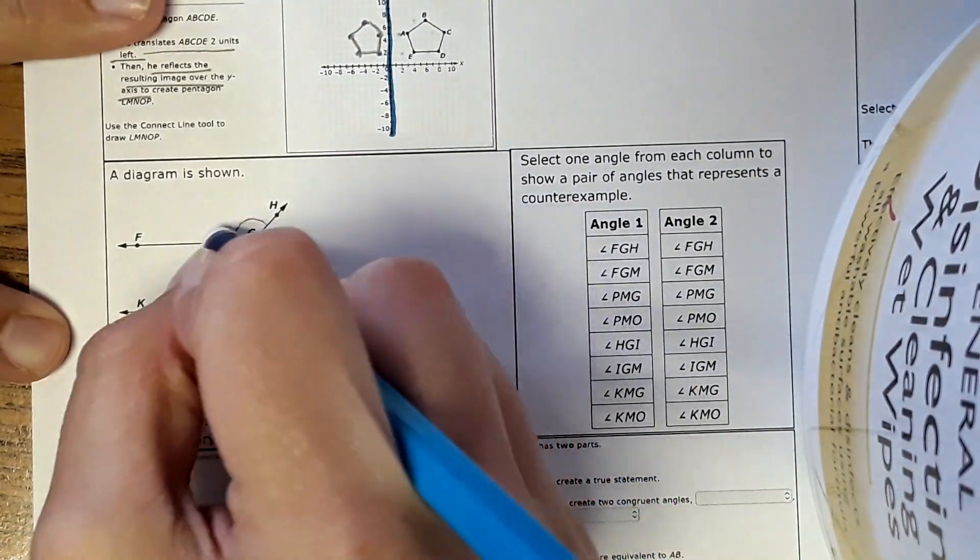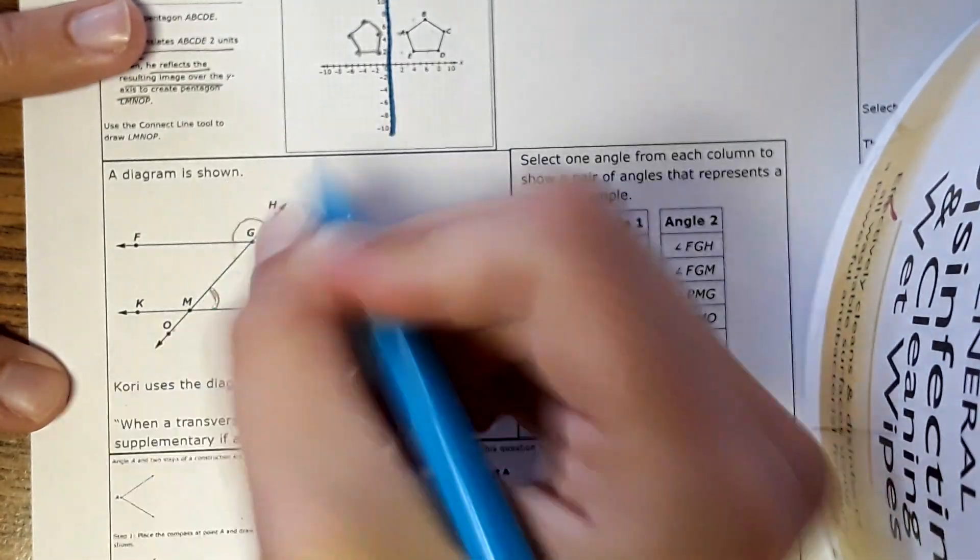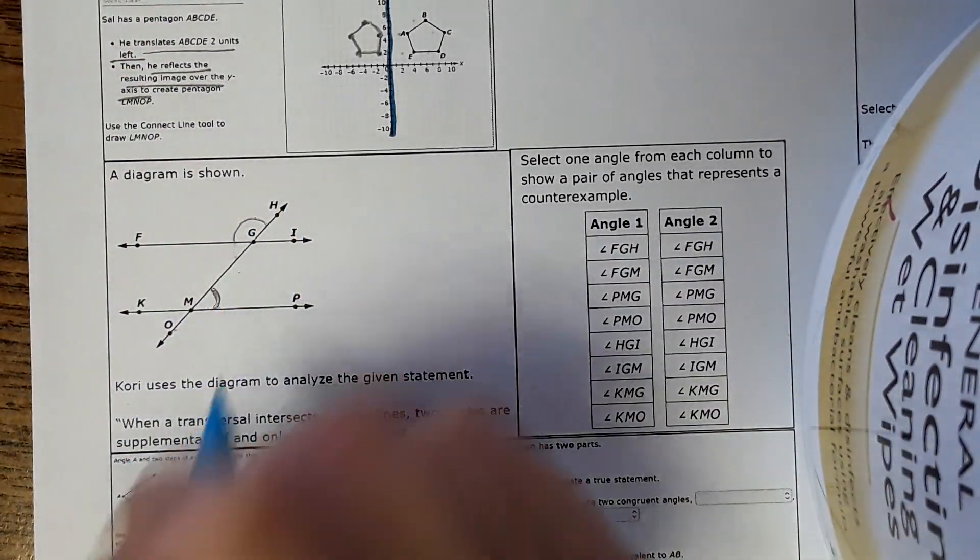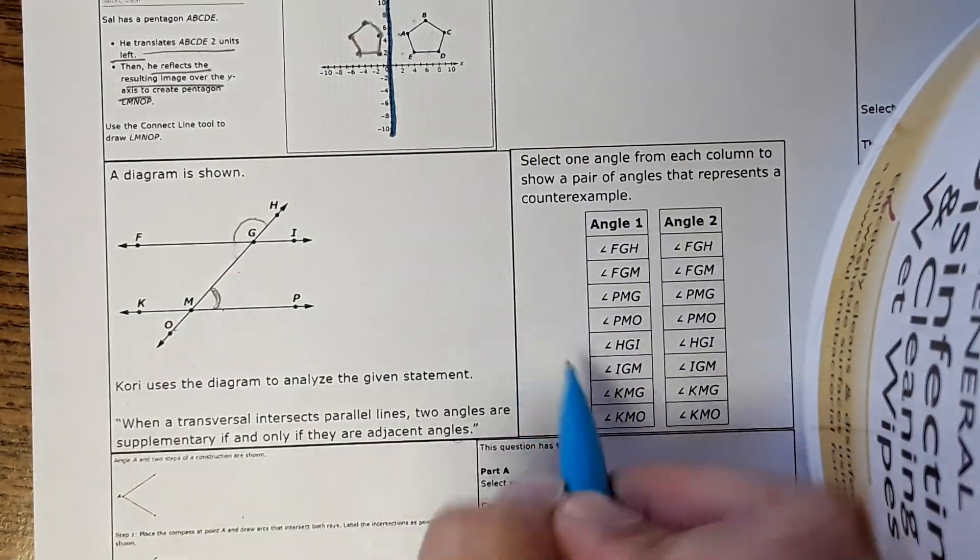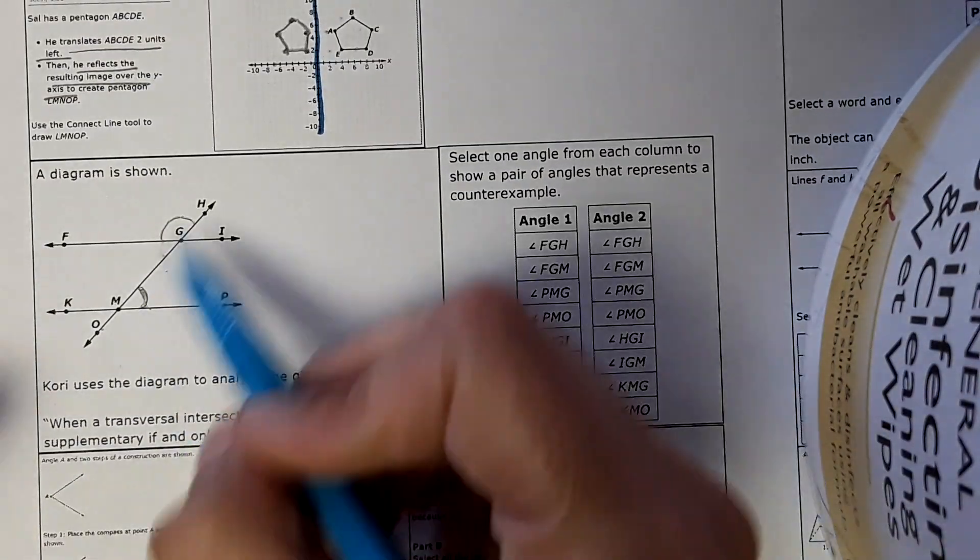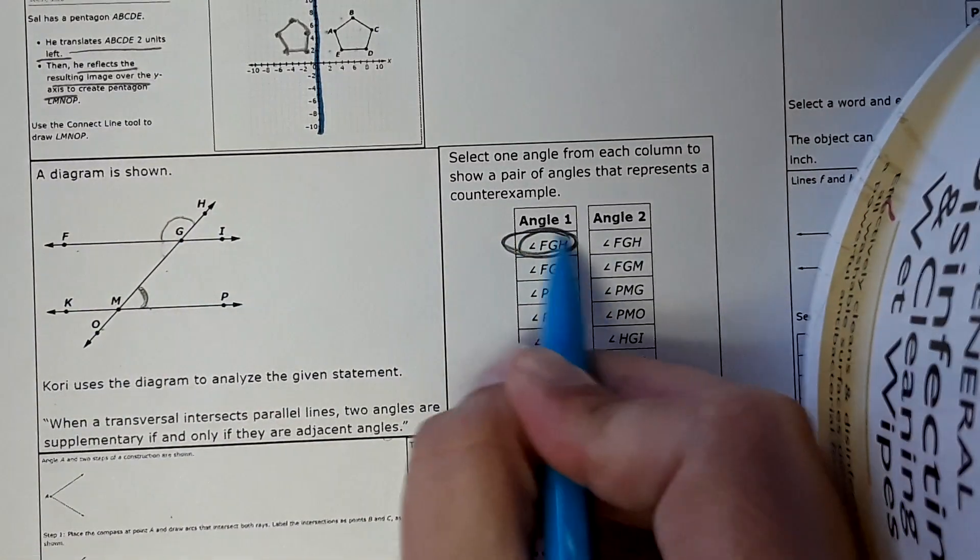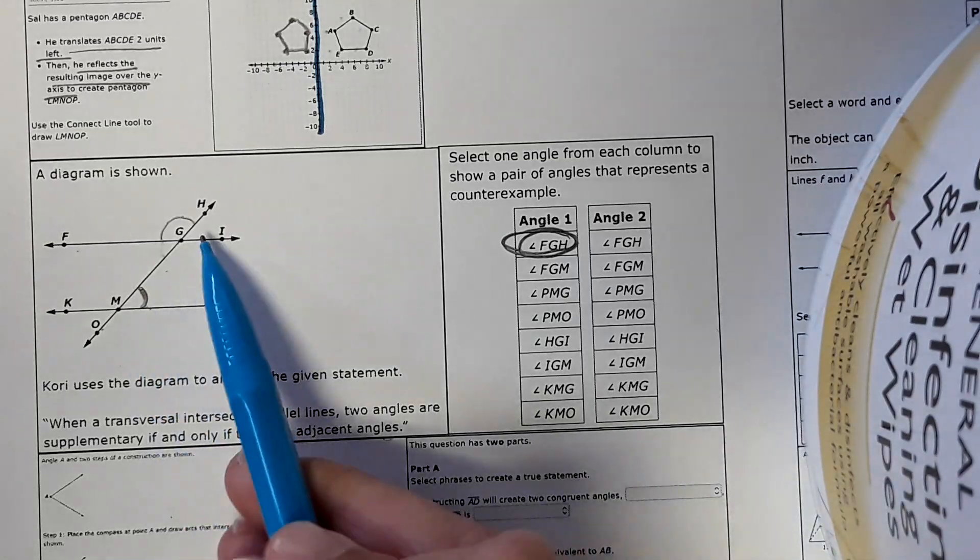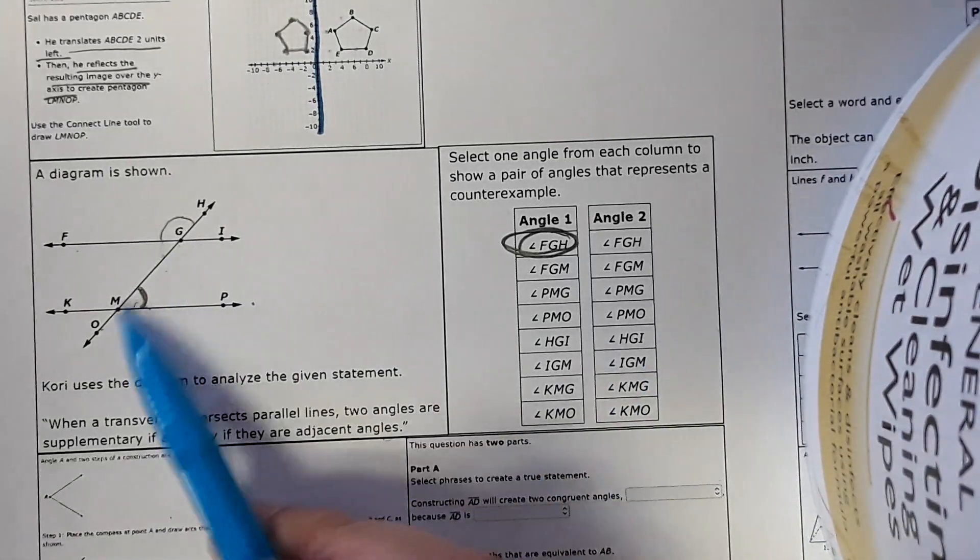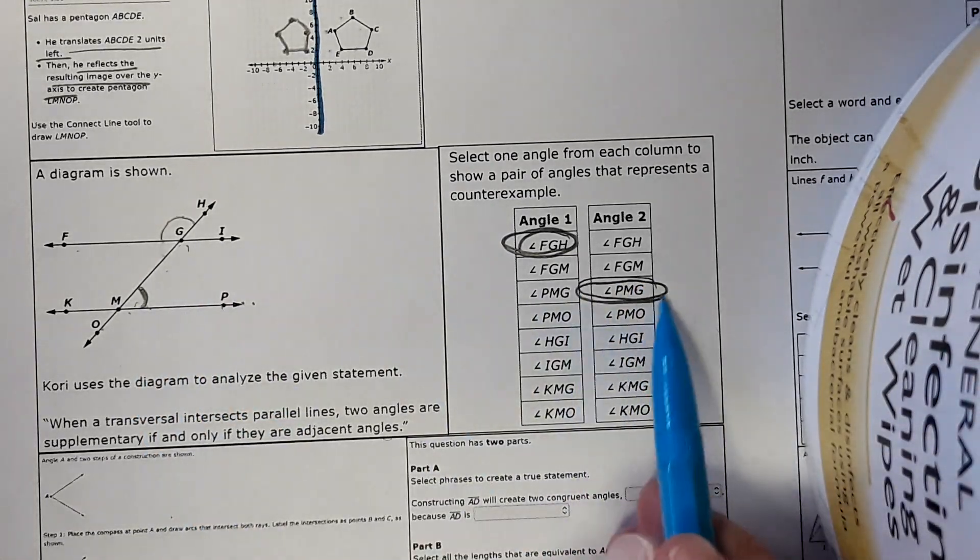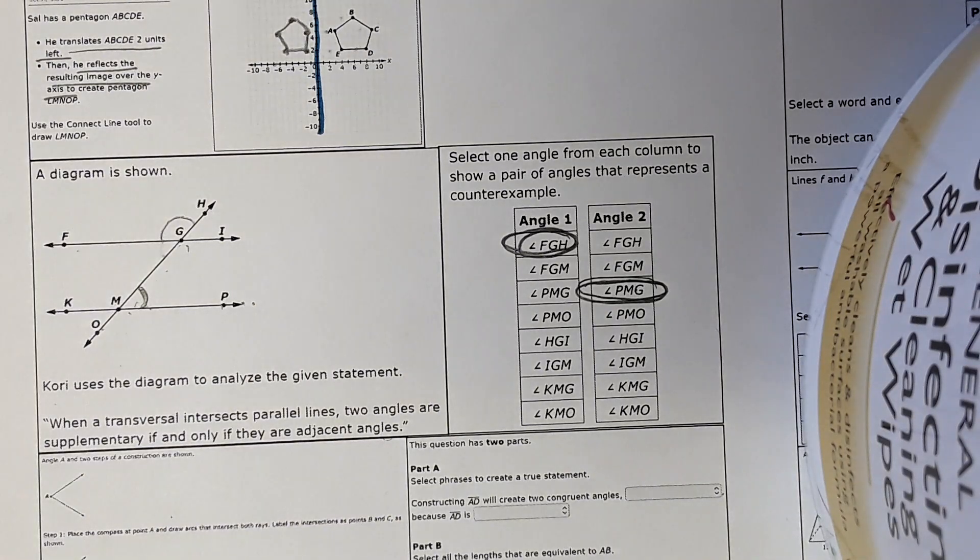For example, this angle and this angle would be supplementary right here. Also, I mean there's different options, but we can just use that to start. So over here we're just choosing a pair of angles that are supplementary but not necessarily adjacent. So FGH, you would click this and it would highlight and then I'm looking for GMP or PMG right here. And there's various correct answers there, but that's one example of a situation where they're supplementary but not adjacent.